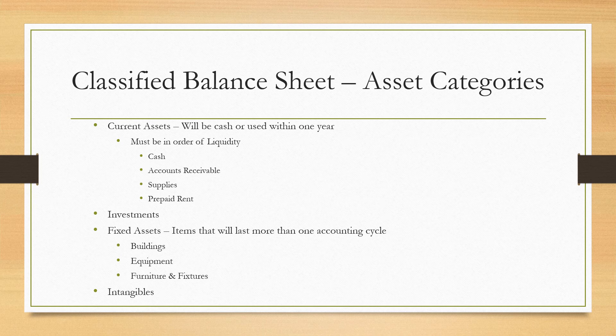Current assets must be listed in order of liquidity — how fast they will become cash. Examples include cash, accounts receivable, supplies, prepaid rent, and prepaid insurance. The investment section covers items like stocks or bonds, or assets not used in production. Fixed assets are items that last more than one accounting cycle, such as buildings, equipment, furniture, and fixtures — with accumulated depreciation subtracted. Intangibles include things like copyrights, goodwill, and patents, and they have their own section as well.